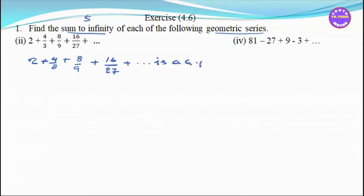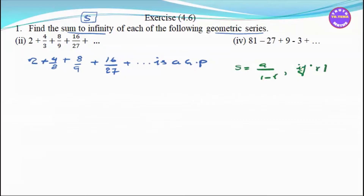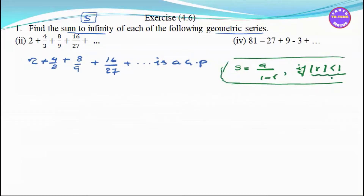This is a GP. For a GP, the sum to infinity formula is S equals a divided by (1 minus r), when the modulus of r is less than 1. If the modulus of r is not less than 1, the sum to infinity does not exist.